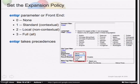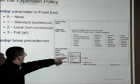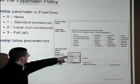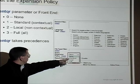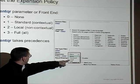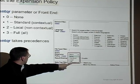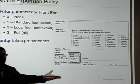There's an additional setting to turn on the types of query expansion you want, per front end. Per front end, you can turn on: None, Standard (which is contextual), Local (which is non-contextual), or Full (which means both).